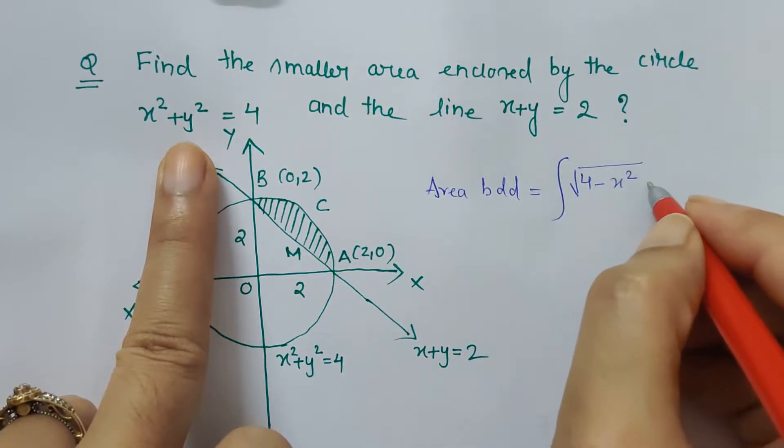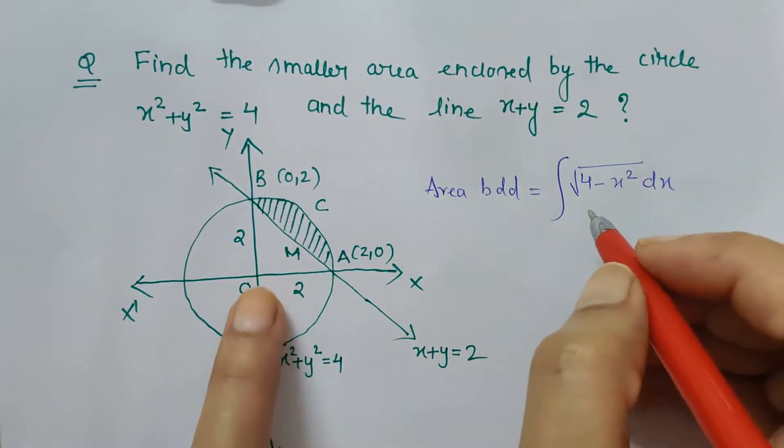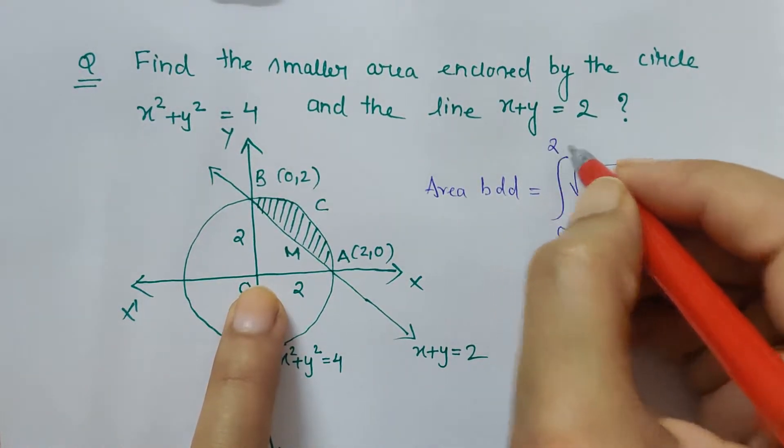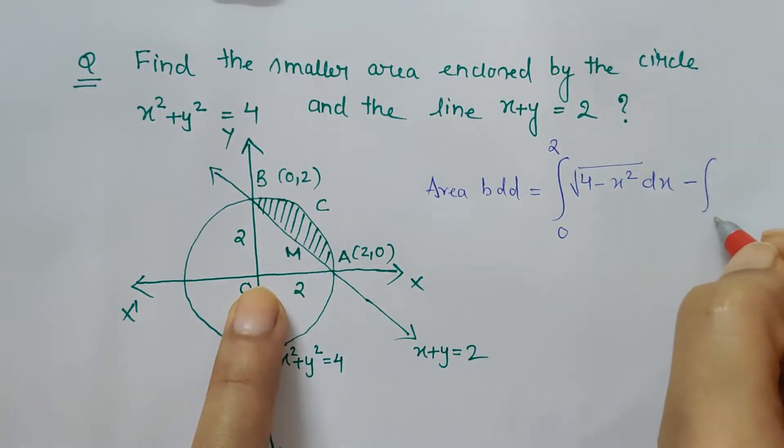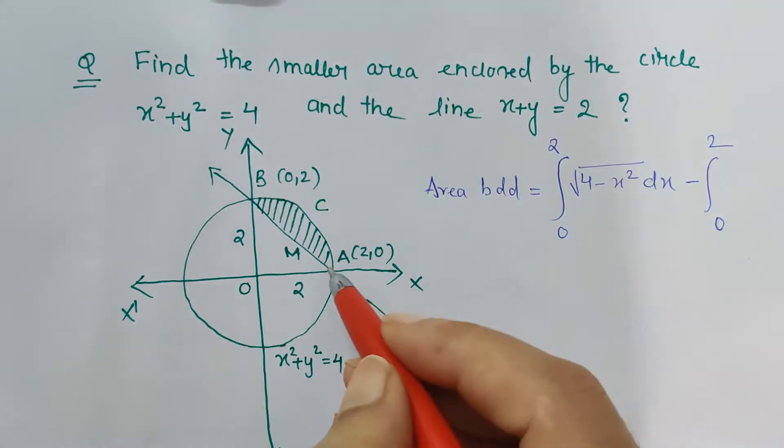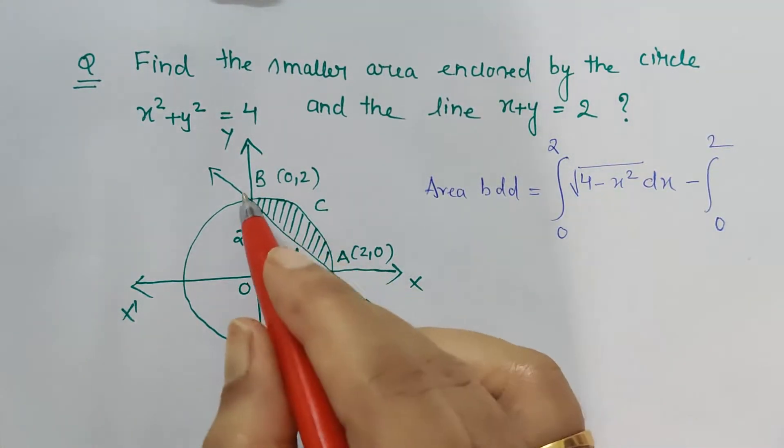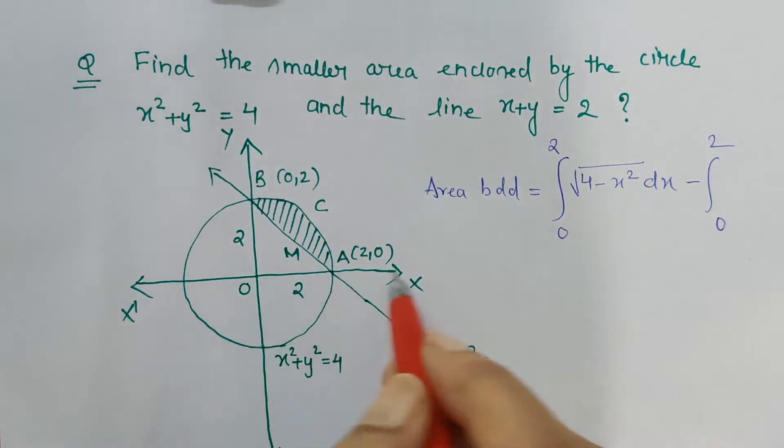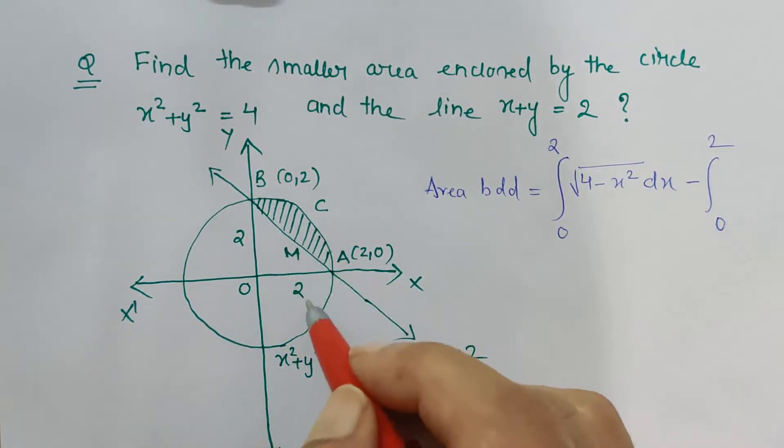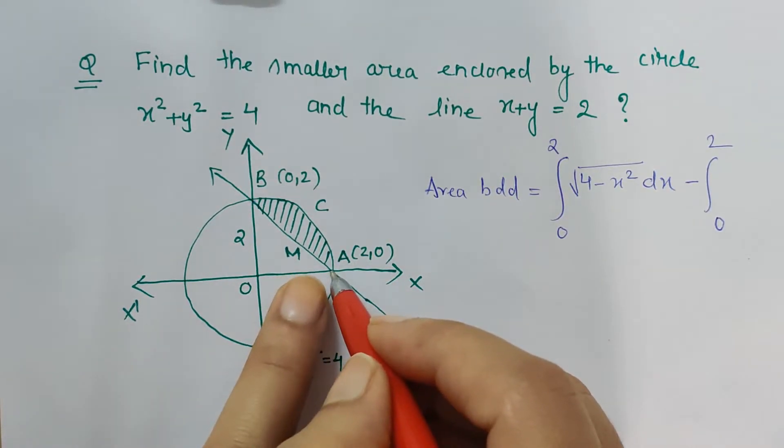The limit is from 0 to 2, minus again 0 to 2, because the point of intersection of the circle and the line is (2, 0) and (0, 2). We are finding the area along the x-axis with rectangular elementary strips.